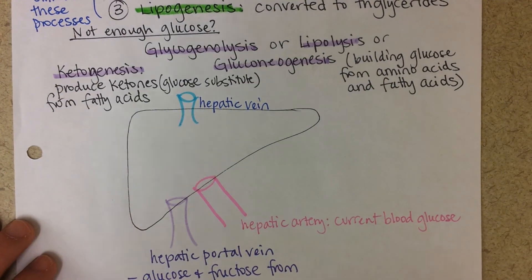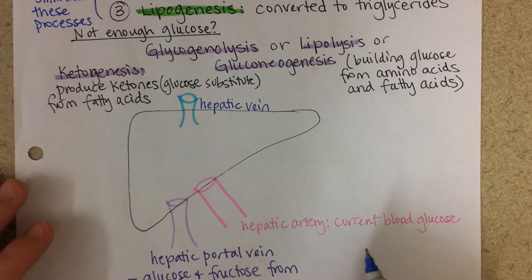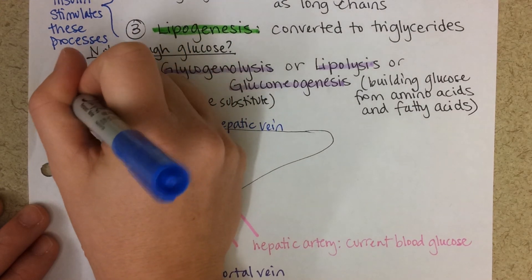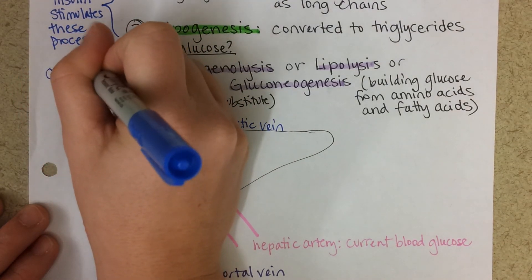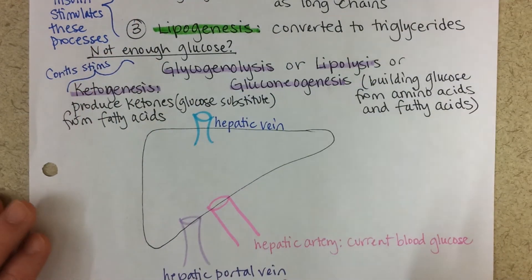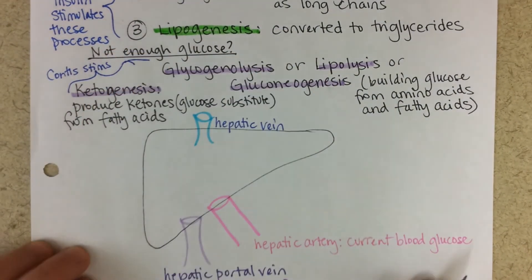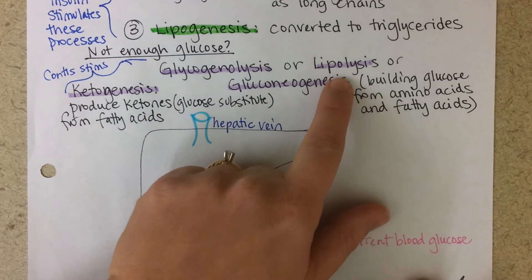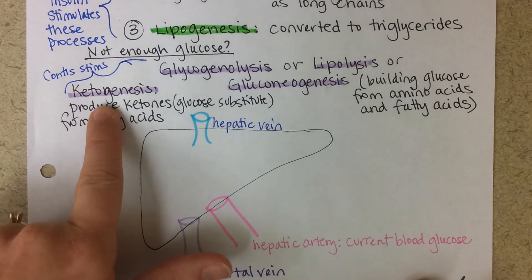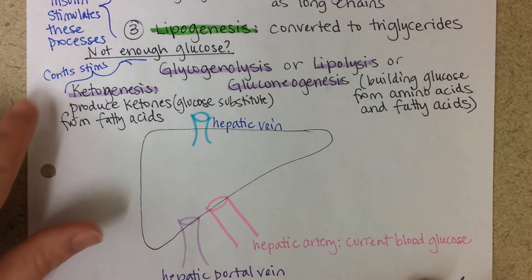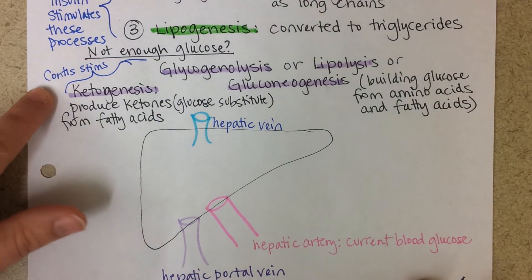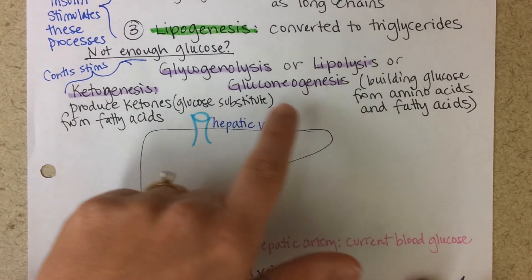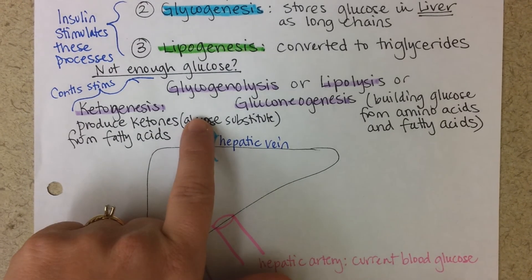A different hormone, cortisol, can stimulate the opposite processes. Cortisol definitely stimulates glycogenolysis, gluconeogenesis, and lipolysis — and possibly ketogenesis as well. The end effect is that cortisol raises blood sugar by stimulating the liver to break down its glycogen and fat stores, make new glucose, and put that glucose back into the blood.